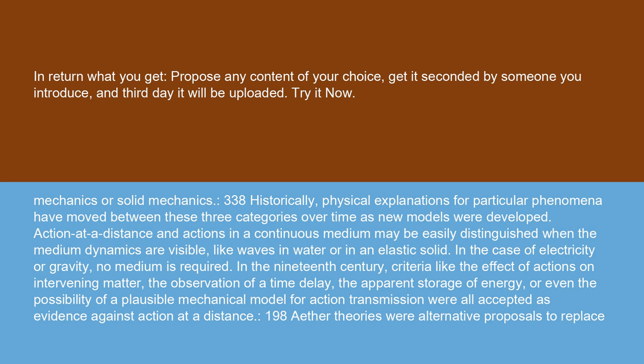Historically, physical explanations for particular phenomena have moved between these three categories over time as new models were developed. Action at a distance and actions in a continuous medium may be easily distinguished when the medium dynamics are visible, like waves in water or in an elastic solid. In the case of electricity or gravity, no medium is required. In the 19th century, criteria like the effect of actions on intervening matter, the observation of a time delay, the apparent storage of energy, or even the possibility of a plausible mechanical model for action transmission were all accepted as evidence against action at a distance.